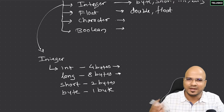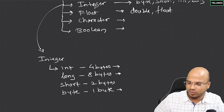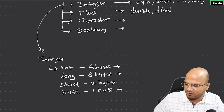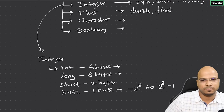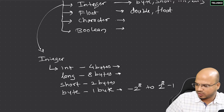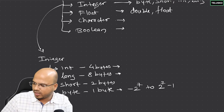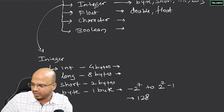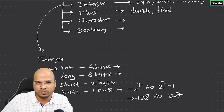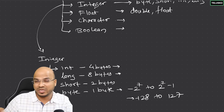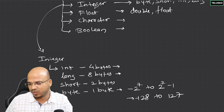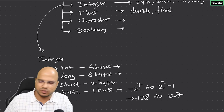Then we have byte, which is only one byte — eight bits — and it has its own range. To calculate the range: it starts from negative, so it is minus 2 raised to 7, up to 2 raised to 7 minus 1. Two raised to 7 is 128, so byte ranges from -128 to +127. That's how you calculate the range for all other integer types as well.